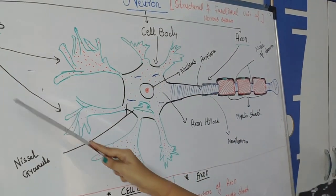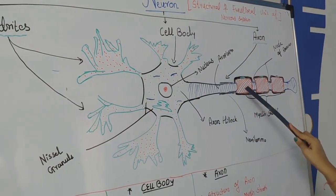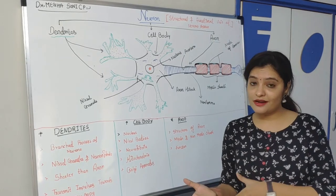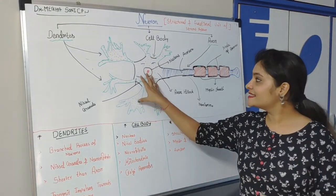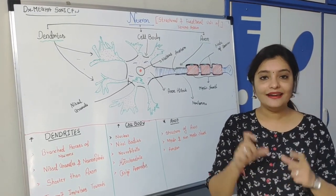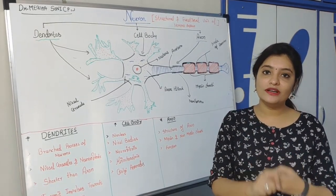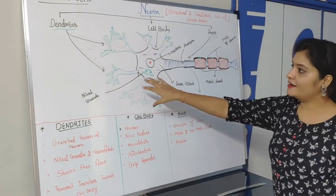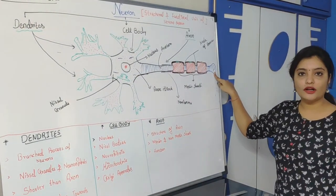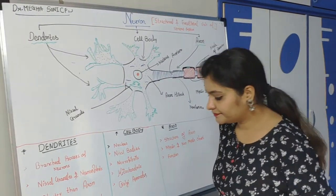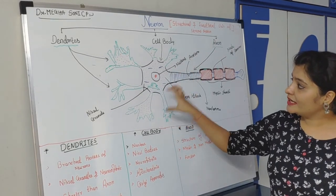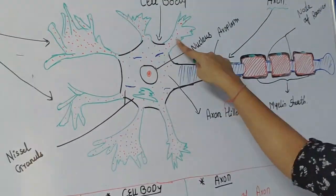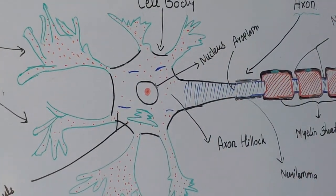Now we will see the function of this neuron and the difference between dendrites and the axon. Neuron mainly has many dendrites. A neuron may or may not have dendrites, but if the cell body has dendrites, they are always more than one and they are short in length. But neuron has only one axon which is long in length. The dendrites are short and many in number, and axon is long but only one in number. The dendrites actually increase the surface area of the cell body, as they originate from the ends of the cell body.